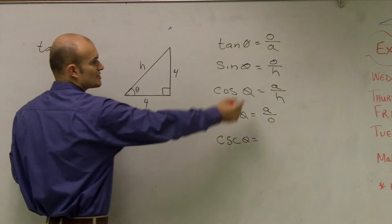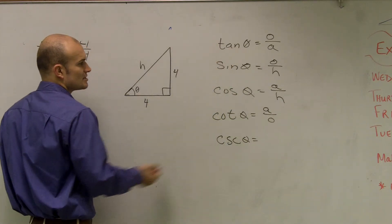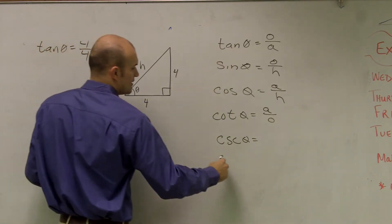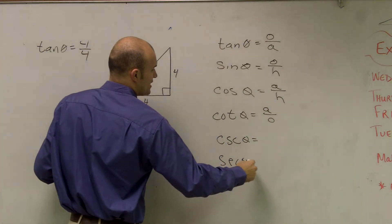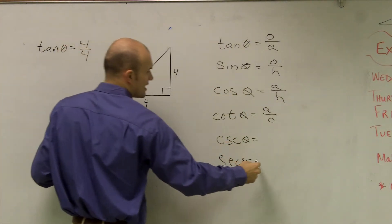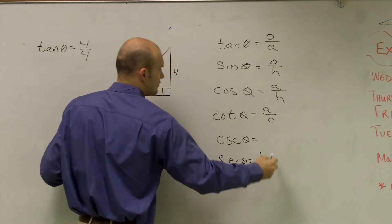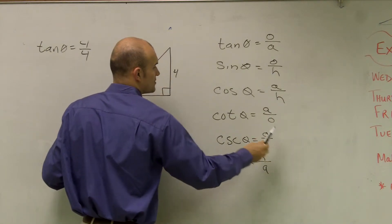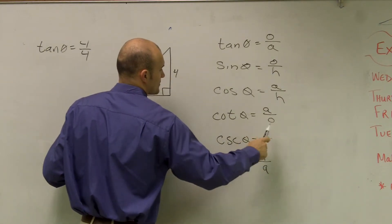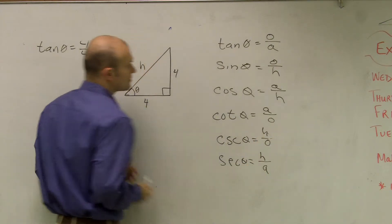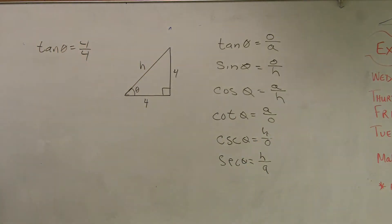So cotangent is going to be the reciprocal of tangent. Cosecant is the reciprocal of sine, and secant of theta is going to be the reciprocal of cosine, which will be hypotenuse over adjacent, and this one is hypotenuse over opposite.